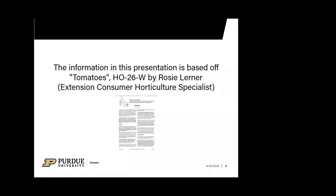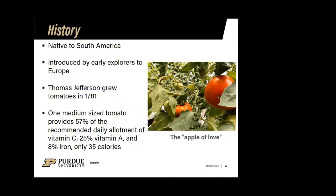When we look at the history of tomatoes, it's very interesting to find out where they come from. Tomatoes are actually native to South America, and then they were introduced to Europe — specifically France and Italy — where we see them in a lot of their cuisine. When they were introduced by early explorers, the tomato was called the 'apple of love.'